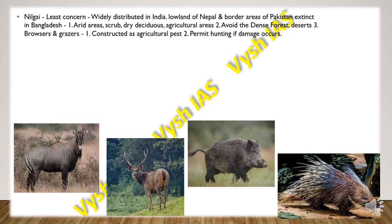Then we have the Nilgai, which is least concerned. It is widely distributed in India, the lowlands of Nepal and border areas of Pakistan, and is extinct in Bangladesh. They are seen in arid areas, scrubs, dry deciduous and agricultural areas, avoiding dense forests and deserts. They are mainly browsers and grazers. The major threats are their status as agricultural pests and the permit of hunting if they cause damage to agricultural fields.